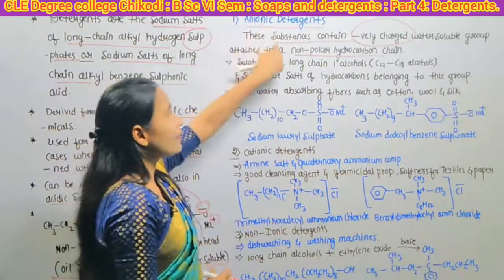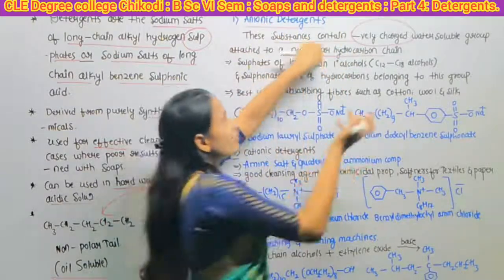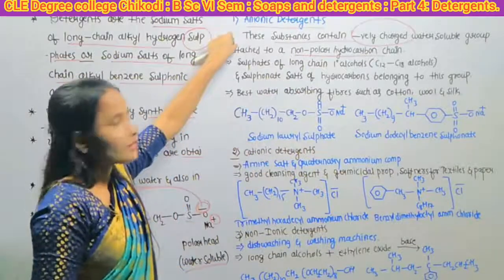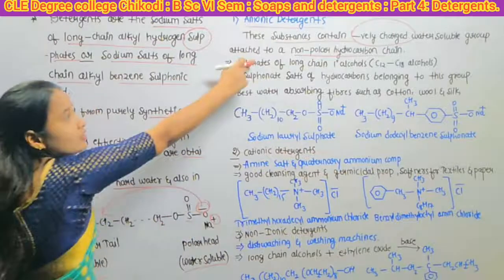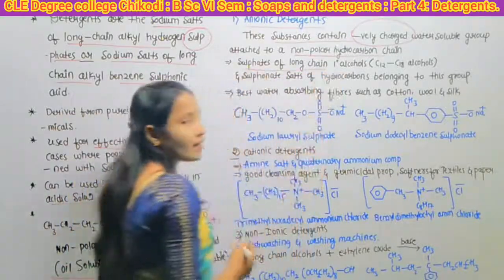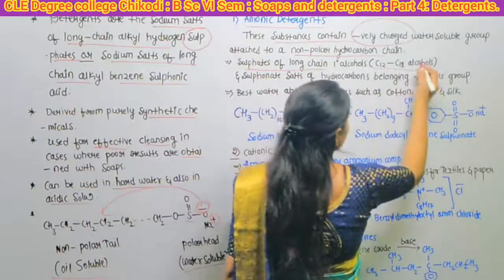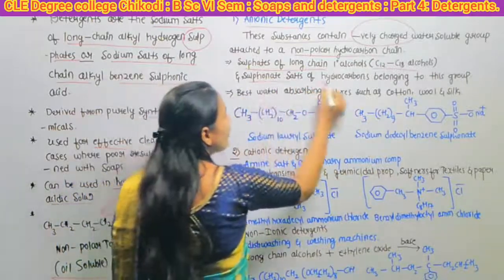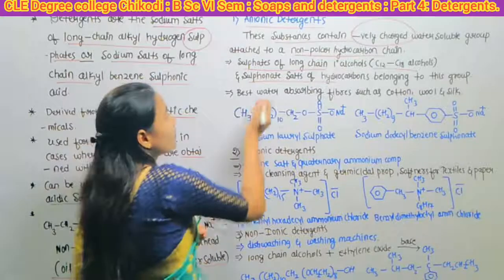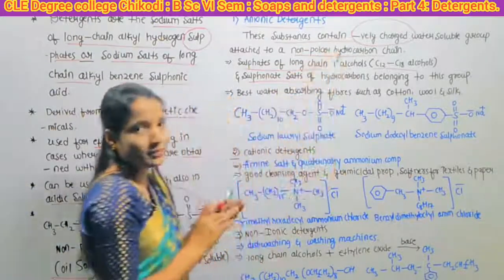Anionic detergents contain a negatively charged water soluble group attached to a non-polar hydrocarbon chain. Two groups belong to anionic detergents: sulfates of long chain primary alcohols (C12 to C18 alcohols), and sulfonate salts of hydrocarbons.